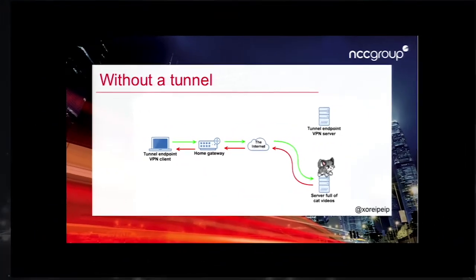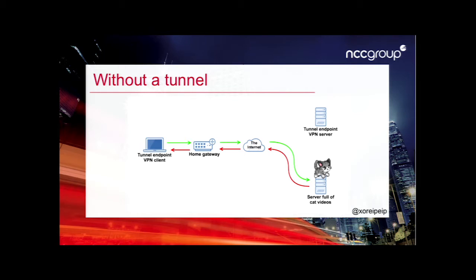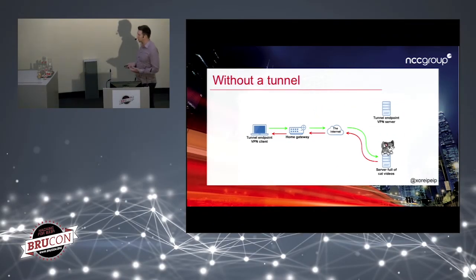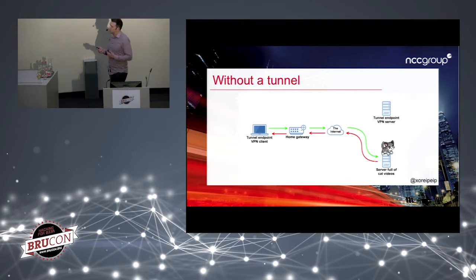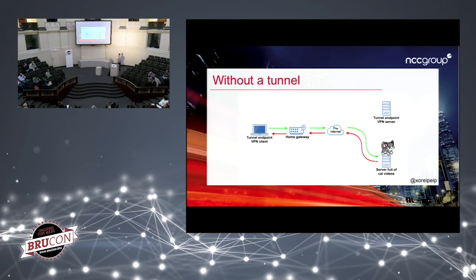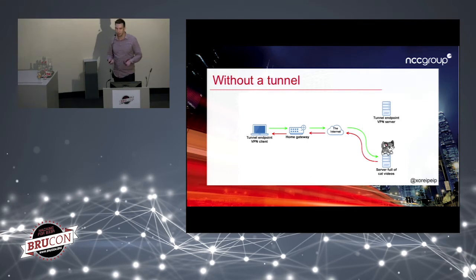For those who didn't raise a hand, I'd like to explain what a VPN or tunnel is. This figure shows how the internet works. You have your endpoint, your laptop on the left-hand side, connected to a router or modem connected to the internet, and a server on the right-hand side with lots of cat videos. If you send and receive data, you go through different routers and hops. All hops will see your original IP address, your original destination, the server IP and client IP. If your communication channel is not encrypted, they can inspect the data.